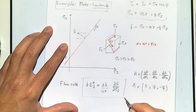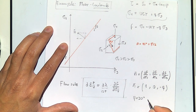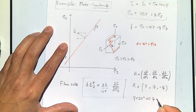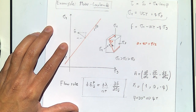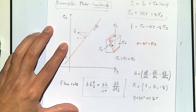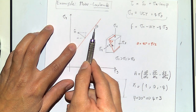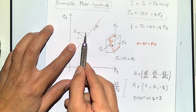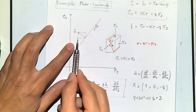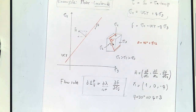Let's put some numbers in. If the friction angle is 30 degrees, what is the value of q? It's going to be equal to 3. So what that means is that in this line, if the slope is 1 to 3, the normal vector has component 1 in the σ₁ direction and negative 3 in the σ₃ direction.